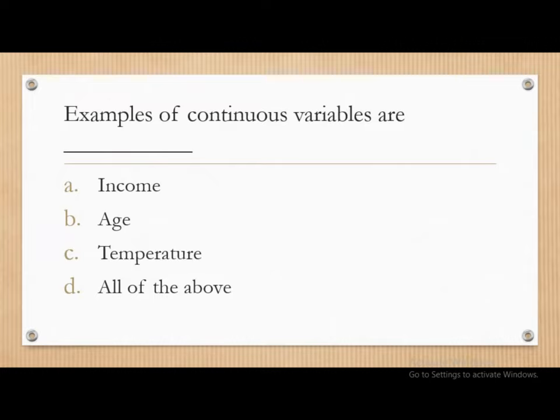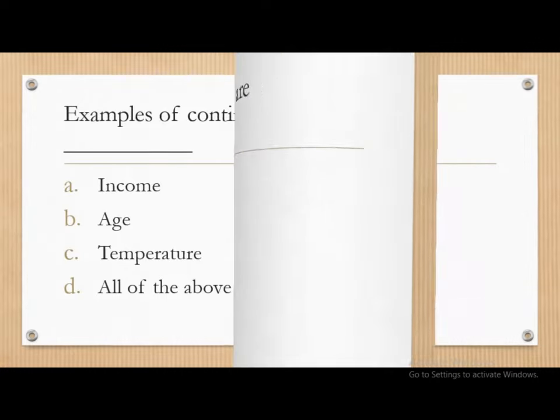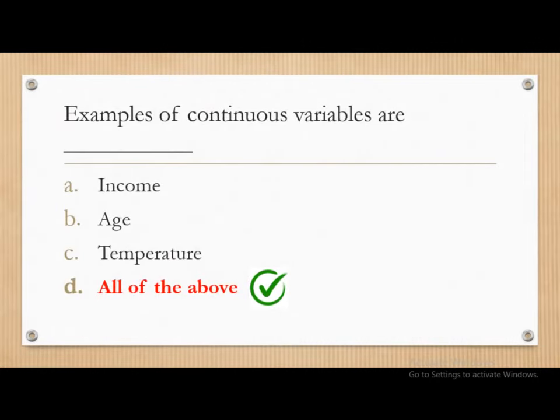Next question. Examples of continuous variables are: income, age, temperature, all of the above. The correct answer is all of the above, because income, age, and temperature are all continuous variables. There are two types of variables — continuous variables and discrete variables — and continuous variables change over time.